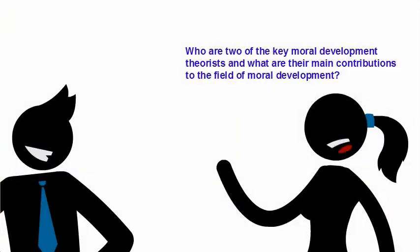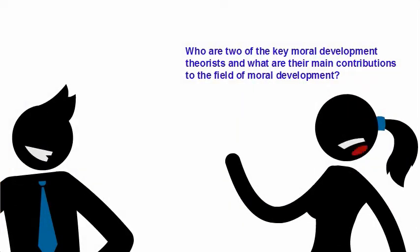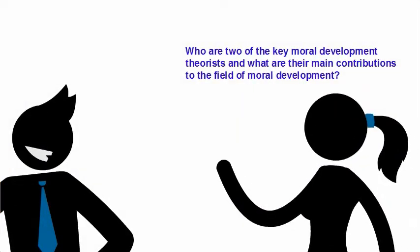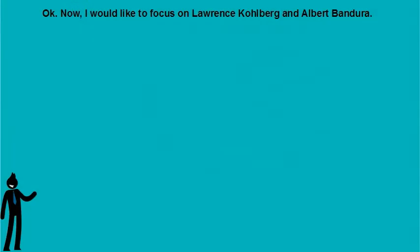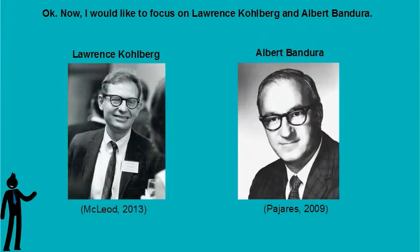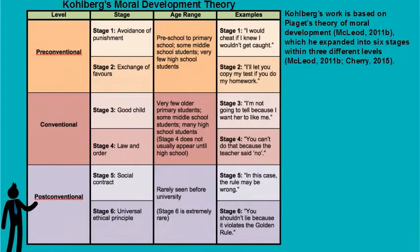Who are two of the key moral development theorists, and what are their main contributions to the field of moral development? I'd like to focus on Laurence Kohlberg and Albert Bandura. Kohlberg's work is based on Piaget's theory of moral development, which he expanded into six stages within three different levels.